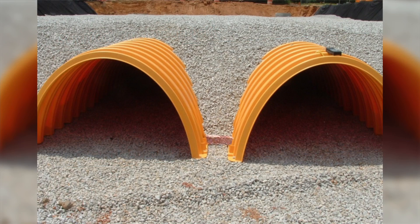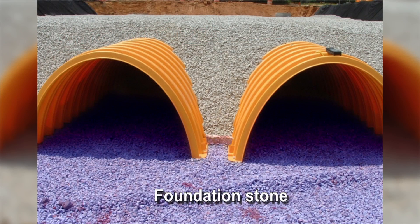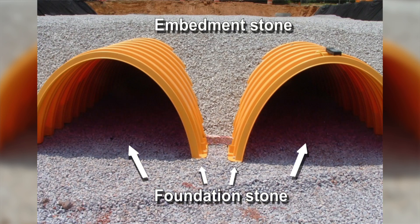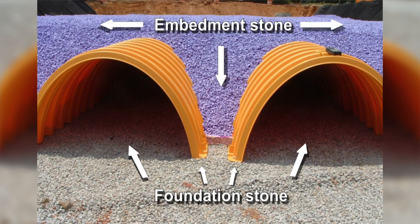Before we get started, let's define two important terms that we will use. The foundation stone is the crushed angular stone under the chambers. The embedment stone is the crushed angular stone between the chambers, to a depth of at least 12 inches over the top of the chambers.